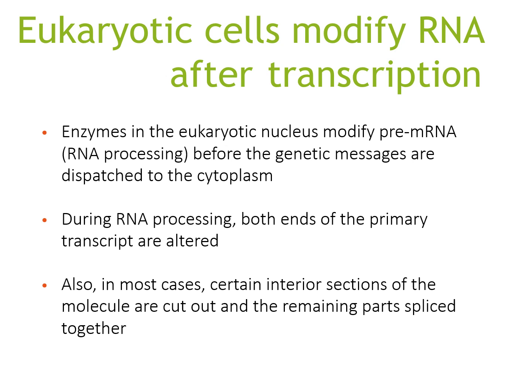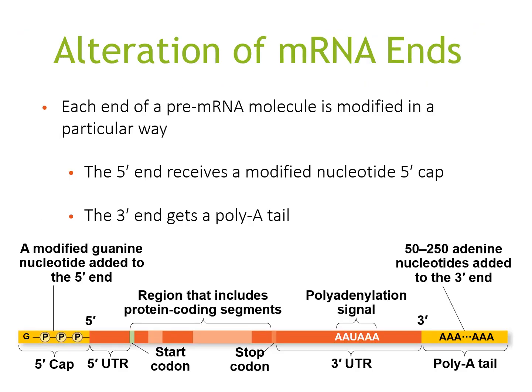As mentioned, RNA processing occurs in eukaryotic nuclei. Enzymes modify pre-mRNA before the genetic message is dispatched to the cytoplasm. During RNA processing, both ends of the primary transcript are altered, and in most cases certain interior sections are cut out and the remaining parts spliced together. Each end of the mRNA molecule is modified: the 5' end receives a modified guanine cap, and the 3' end gets a poly-A tail — a long stretch of adenine nucleotides as you can see here.